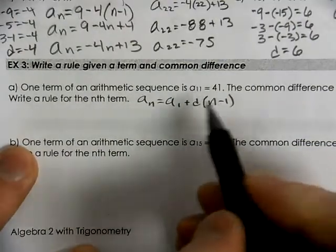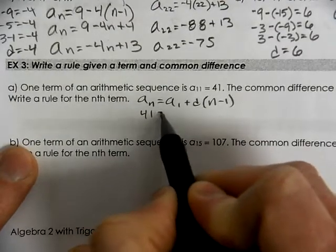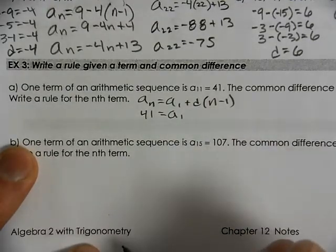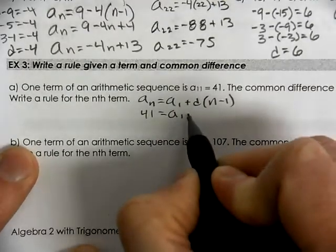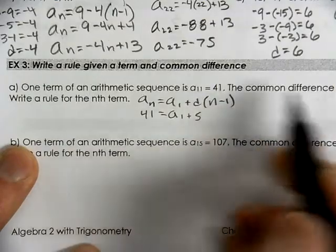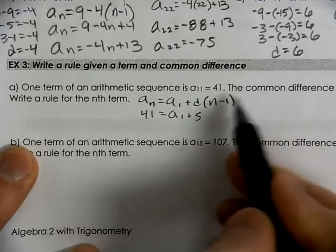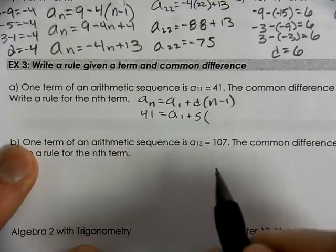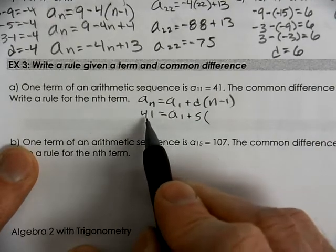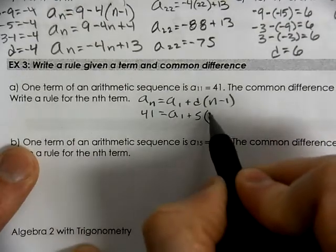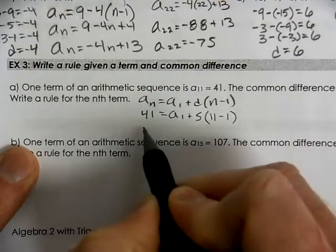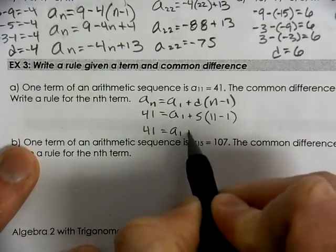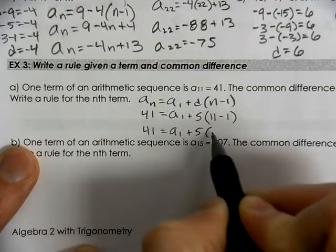When your final answer is 41, we have a first term, which we don't know what it is. We have a common difference of 5, written up here in the given. The n, we do know what the n is this time. To get 41, we're working with the 11th term.